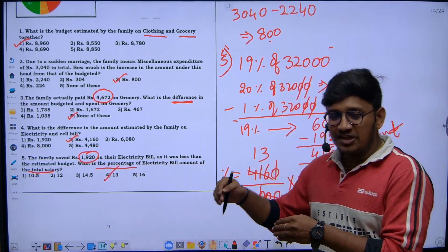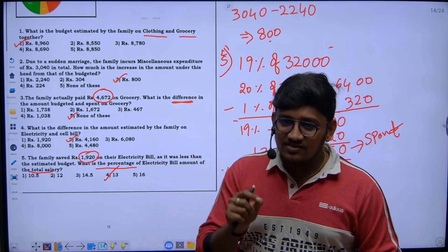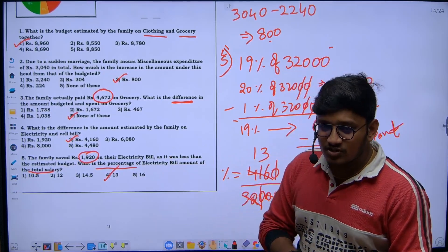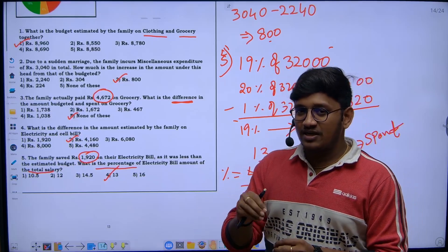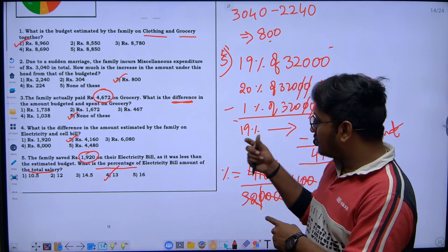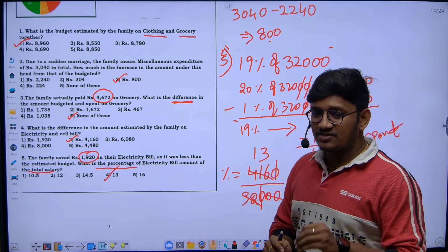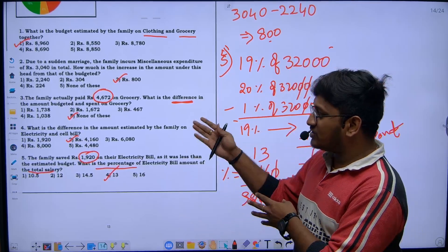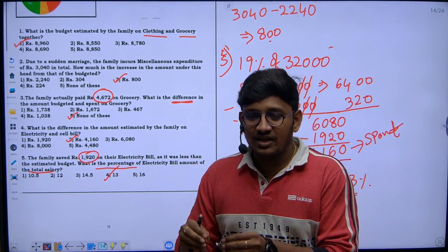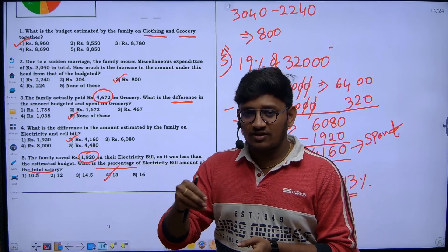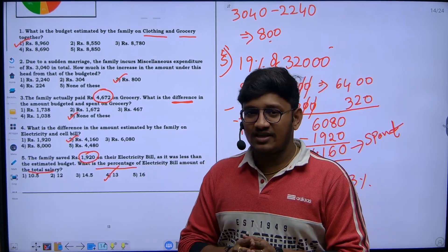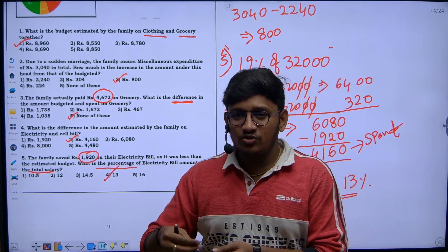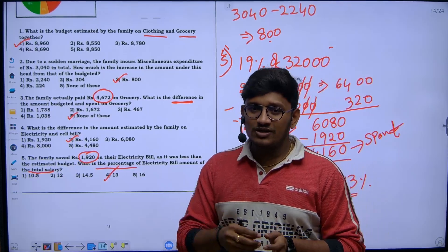This is how you solve questions from data interpretation. I suggest that before solving data interpretation questions, first have a clear understanding of percentages, profit and loss, and general aptitude concepts — it will make analyzing and solving these calculations much easier. Before attempting data interpretation, watch the videos on percentages and profit and loss. There will be a definite question in exams based on these graphs. Post your topic names in the comments and we'll make a video. Thank you all, I hope you liked this video — we are here to help you clear your competitive exams.